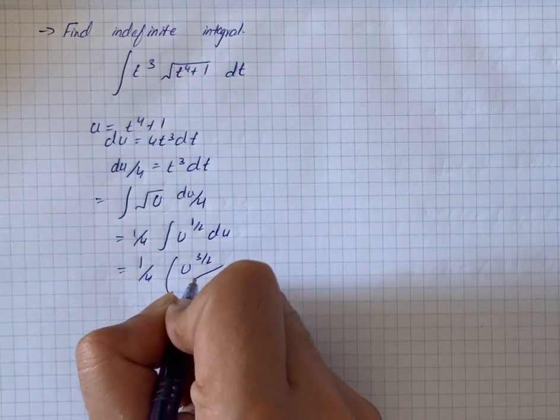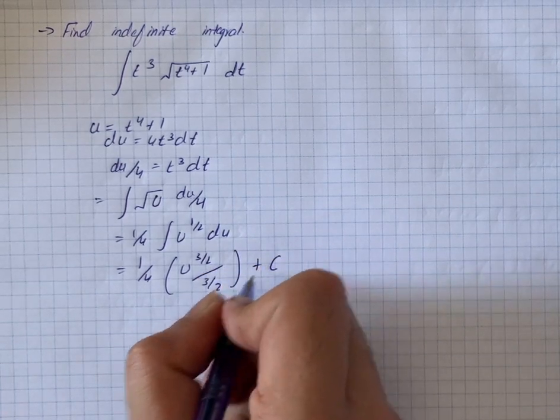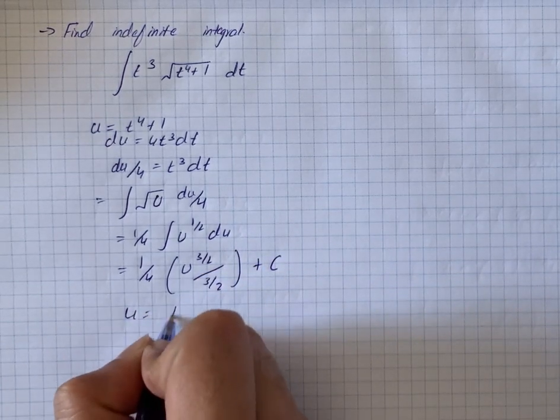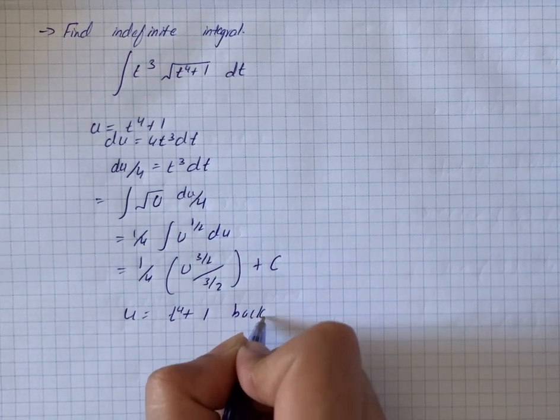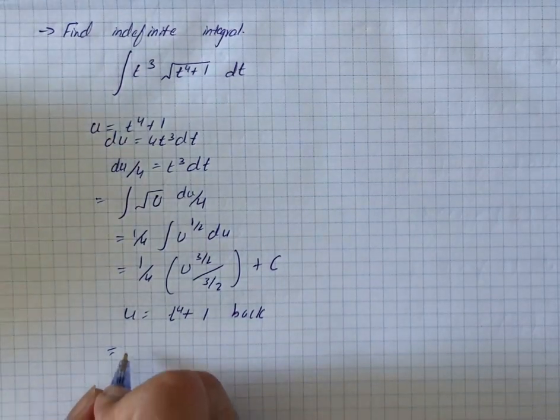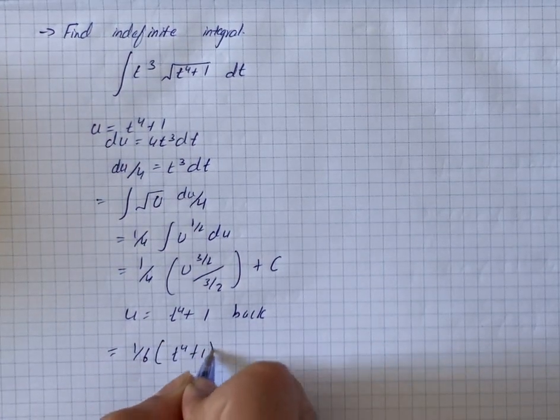So u is equal to t⁴ plus 1, back we will put it back. It will give us 1 by 6 into t⁴ plus 1 raised to power 3 by 2 plus c.